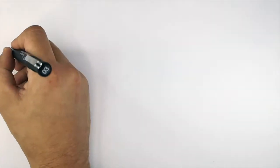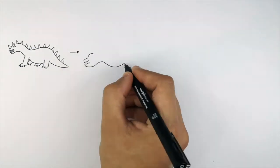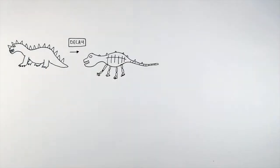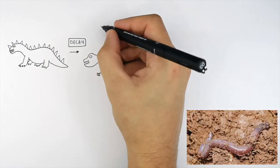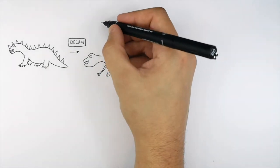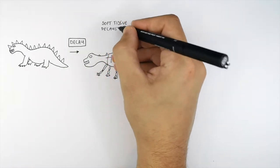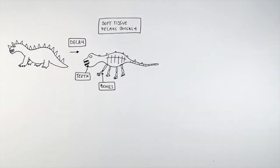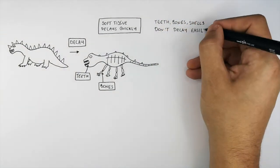This here is a dinosaur, and the soft tissue has decayed, leaving the bones behind. Decomposers such as fungi, bacteria, and detritus feeders will decompose the soft tissue. The soft tissue decays quickly, leaving the bones and the teeth behind, because they don't decay as quickly. So teeth, bones, and shells don't decay easily.